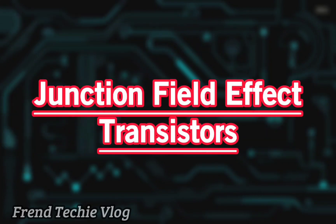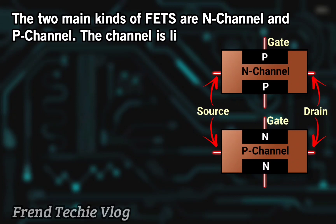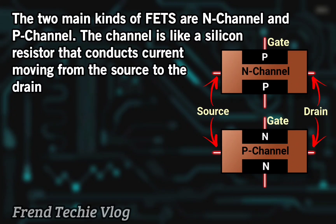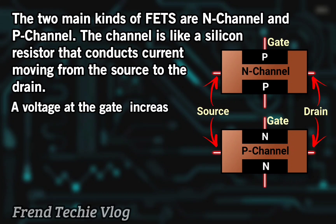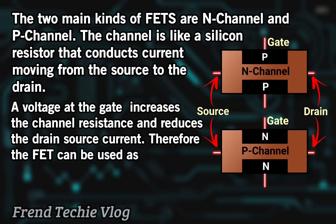The two main kinds of field effect transistors are N-channel and P-channel. The channel is like a silicon resistor that conducts current moving from the source to the drain. A voltage at the gate increases the channel resistance and reduces the drain-source current.